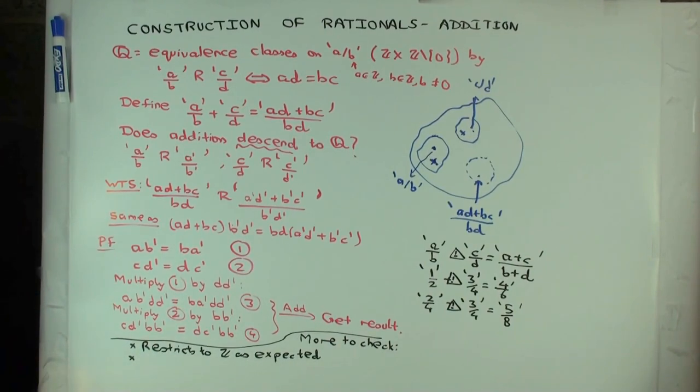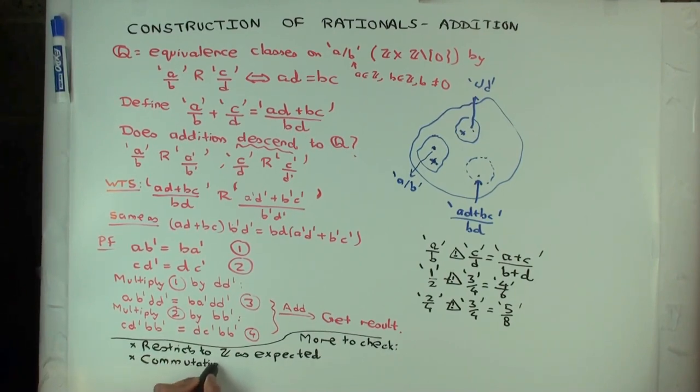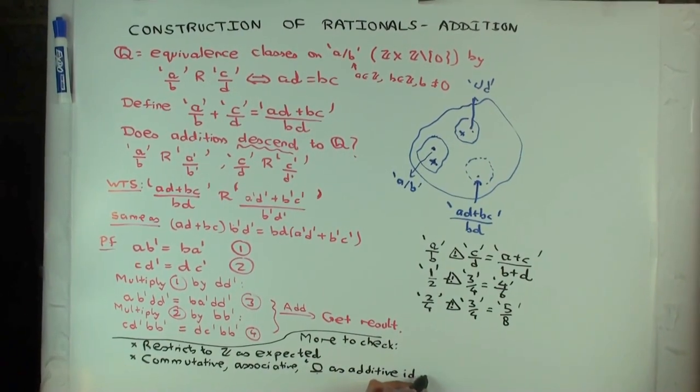Well, we want to check that it satisfies the usual conditions we associate with addition. So that means it should be commutative, associative, and it should have zero as identity, additive identity. Yes, that's also true in this case. So zero as additive identity. Additive inverses.